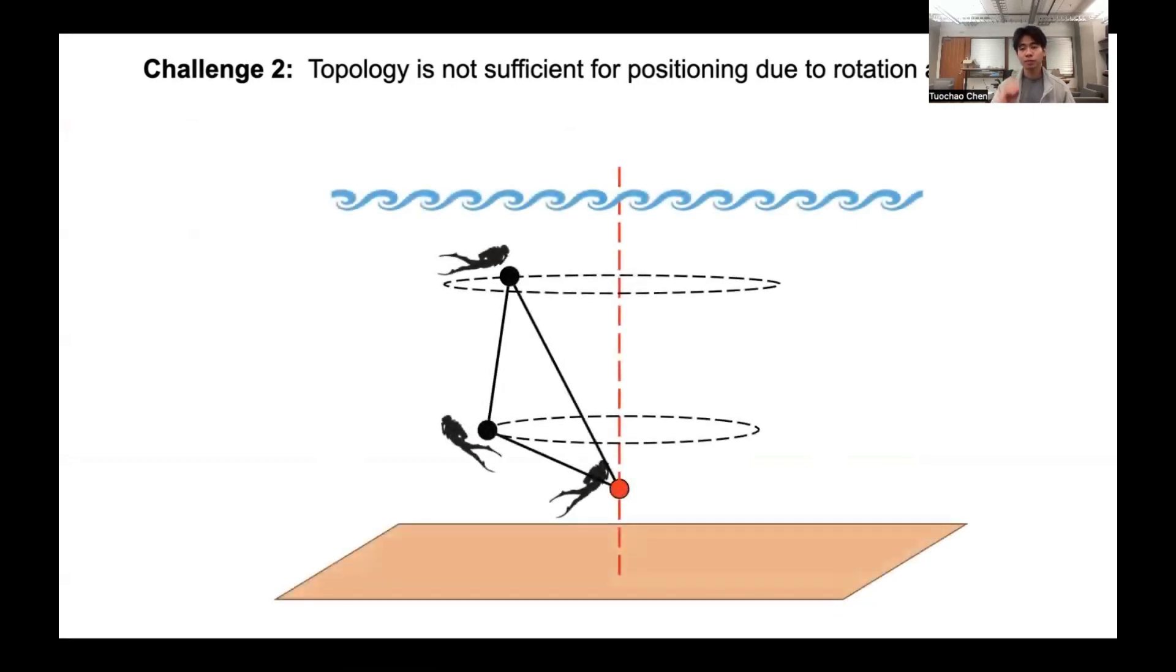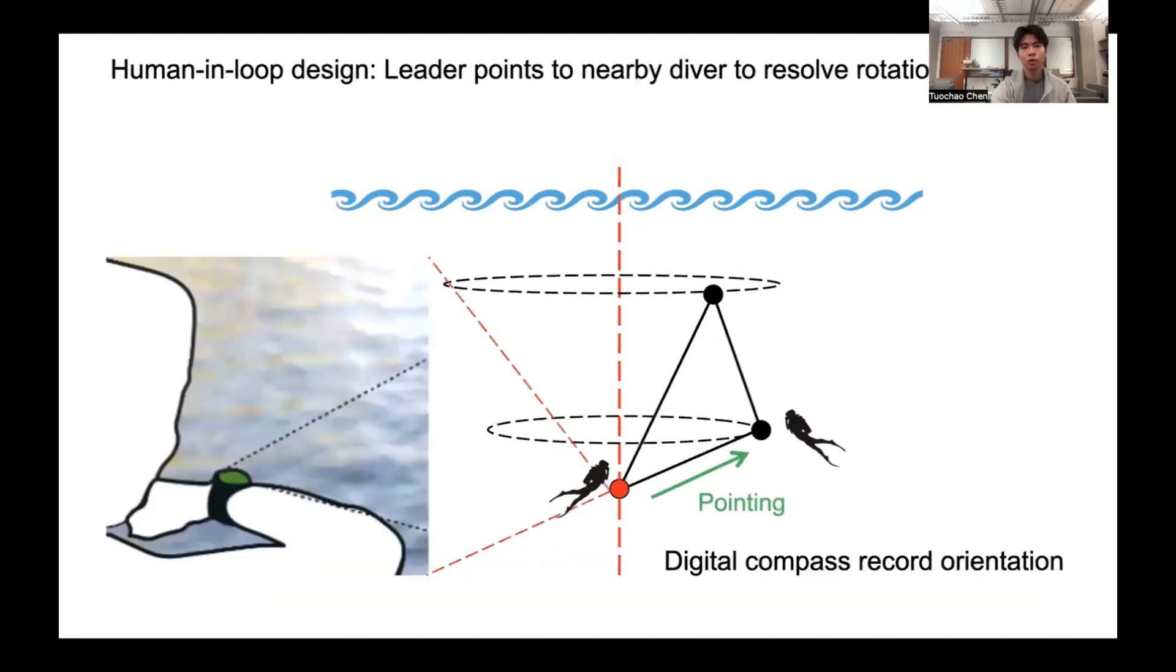The second challenge is that the topology is fundamentally not sufficient for positioning due to rotation ambiguities. Given the topology here, the diver positions can still rotate along the axis of the leader. So we still cannot determine the relative 3D positions of the divers.